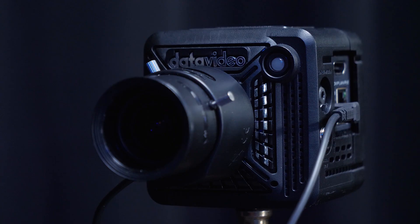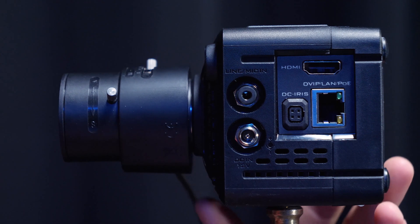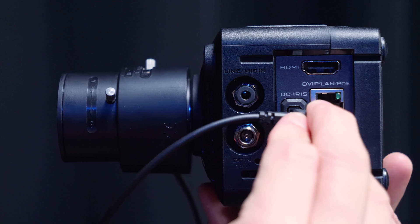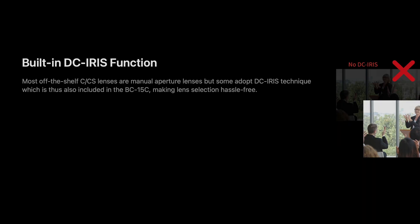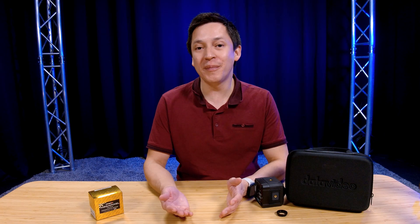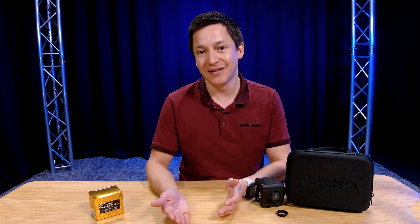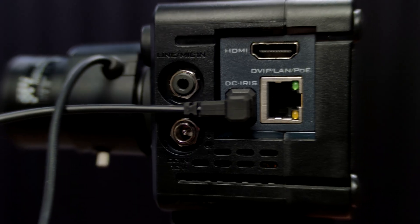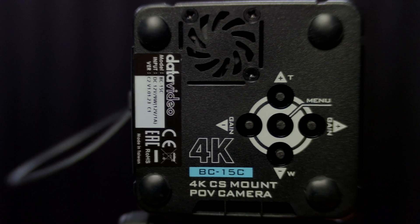Everything is the same, except the DataVideo BC-15C has a different mount. On the side you'll also notice a DC iris input, which is for powering lenses to have electronic iris support. To learn more, there's a link in the description to the BC-15C product page.